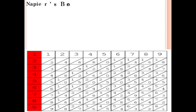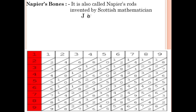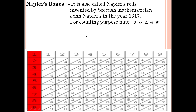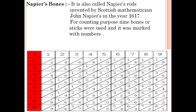This device is called Napier's Bones, invented by Scottish mathematician John Napier in the year 1617. The main purpose of Napier's Bones was for counting numbers — more than the Abacus could handle. Nine bolts or sticks were used and they were marked with numbers.